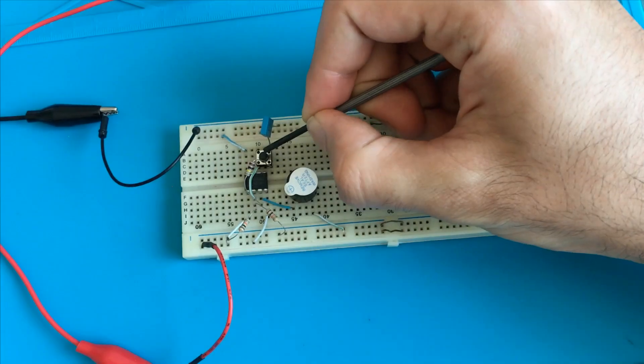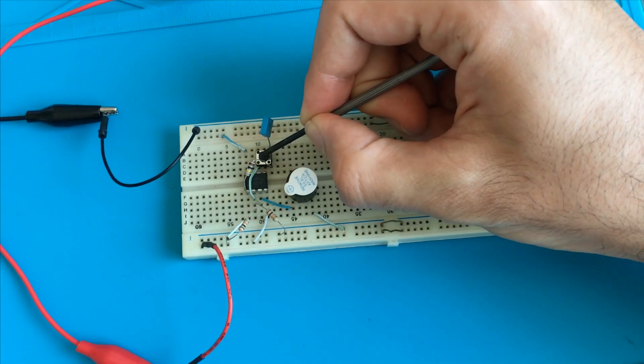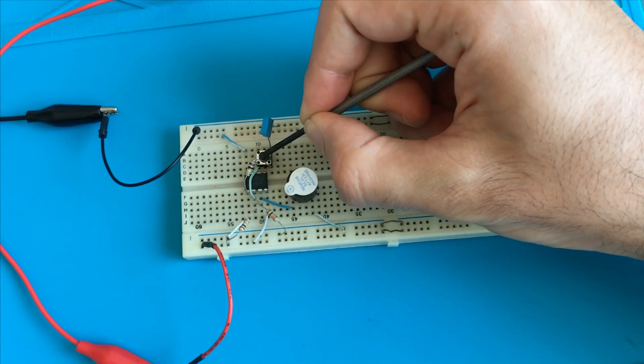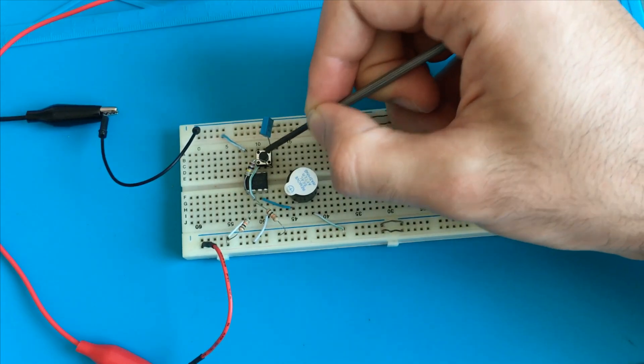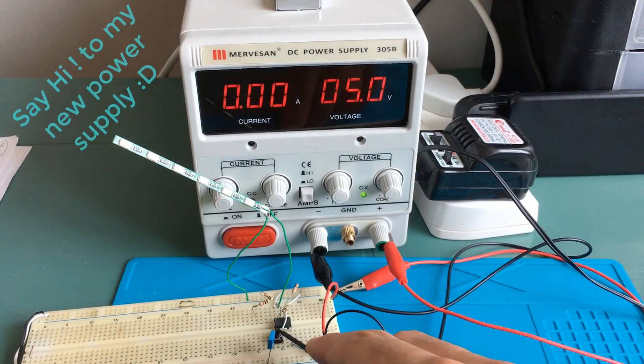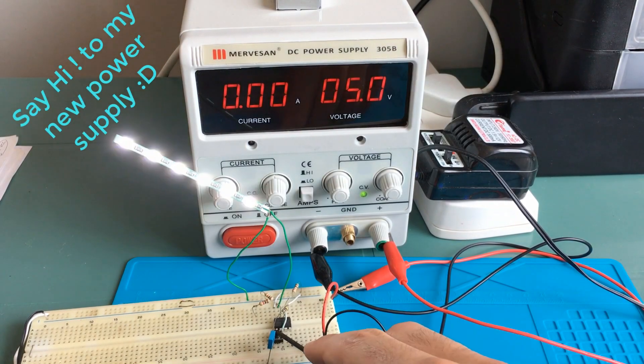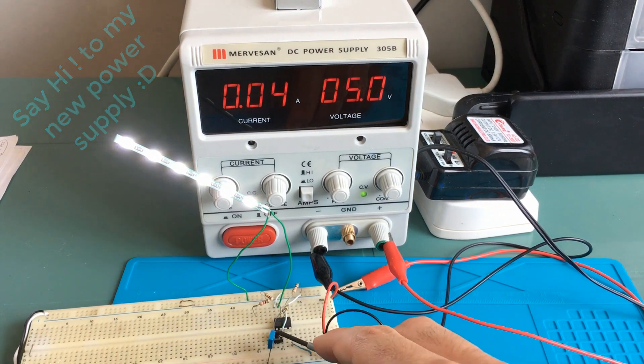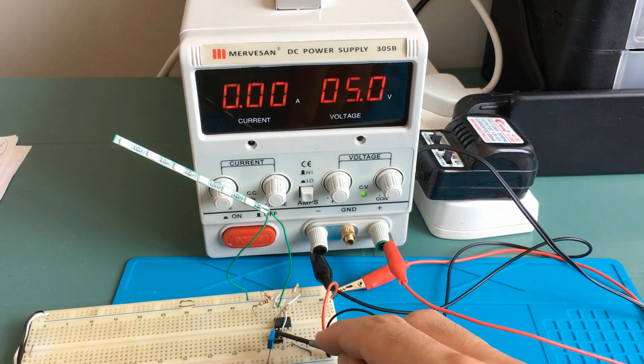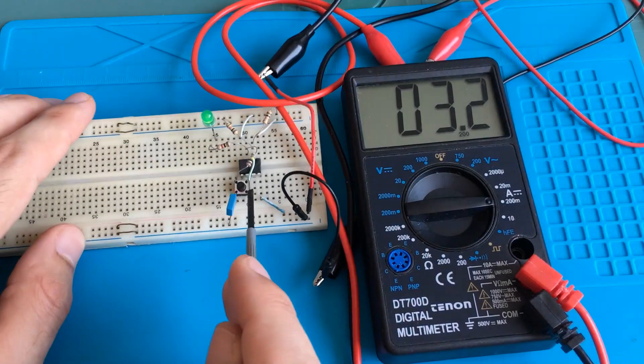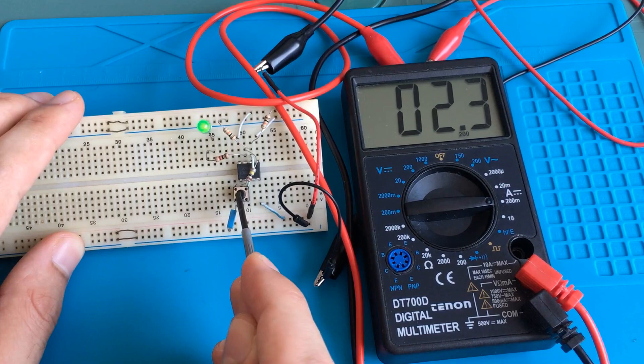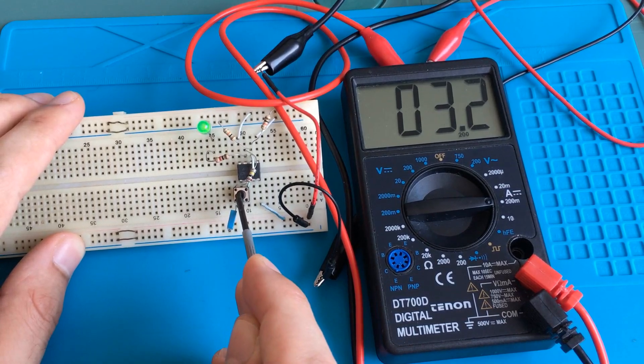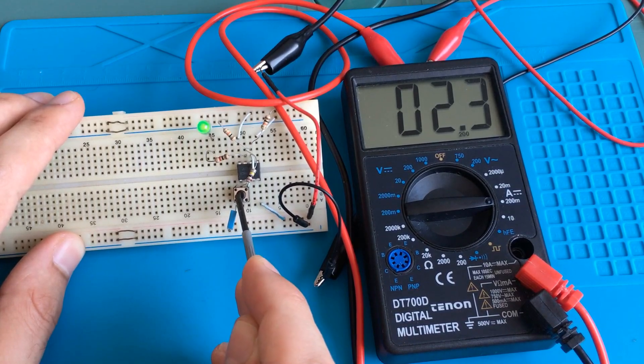Alright, now it's time to put everything on a breadboard and test the circuit with some different loads. I just want to mention that I've tried to run a motor using this circuit, but none of my trials were successful. We can see that when the circuit output is zero, the current consumption is around 2.3 milliamps.